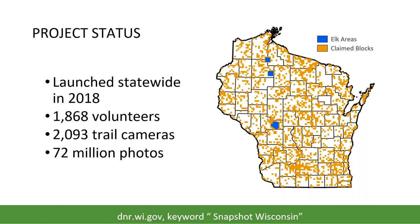Currently, there are over 1,800 volunteers with over 2,000 trail cameras. Over the course of this project, the team has collected over 72 million trail camera photos, with about 1 million photos taken per month. In the figure here, the orange blocks indicate where the volunteers host trail cameras, and the blue areas indicate where elk populations live. You'll also notice a higher concentration of trail cameras to monitor and reintroduce elk herds.